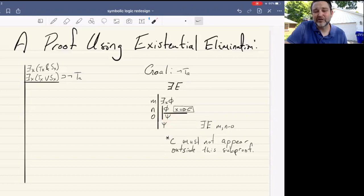And our conclusion psi is supposed not to have any instances of the letter C within it. And if that's true, then we can derive psi at the main level of proof outside of this subproof. Now importantly, the name C must not appear outside of the subproof. We don't want C to have come before the subproof because we don't want any special properties attached to the name that we're using to reason here.